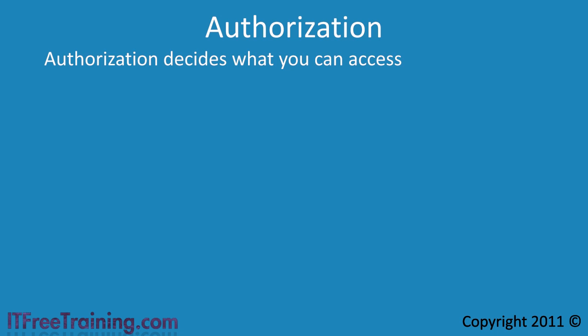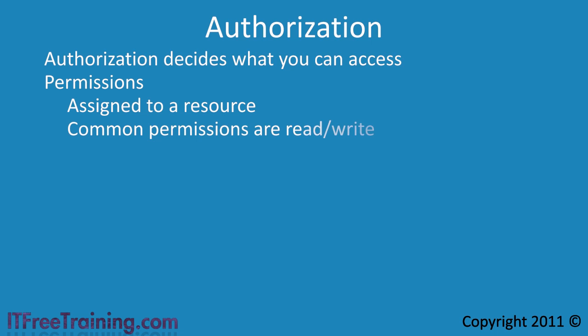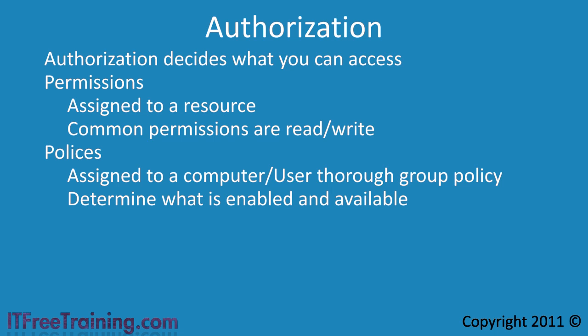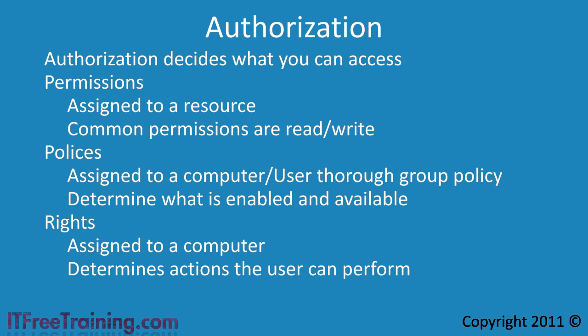Authorization is normally done through three different systems. First, you have permissions — assigned to a resource such as a file, they determine what the person can do, with common permissions being read and write. Next, you have policies, assigned to a computer or user through group policy; they determine if something is available, for example if the user can access the control panel or change the wallpaper. Lastly, you have rights, which are assigned to the computer and determine what actions the user can perform.